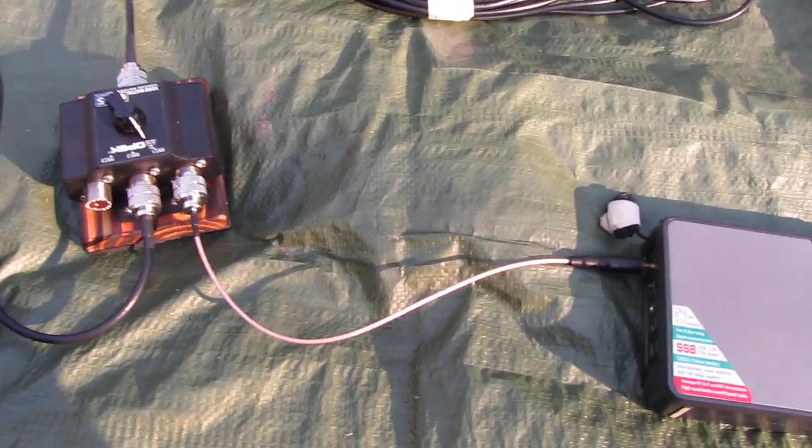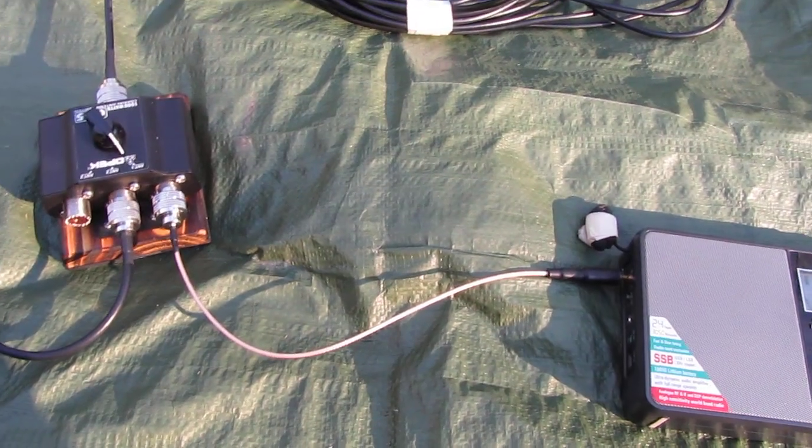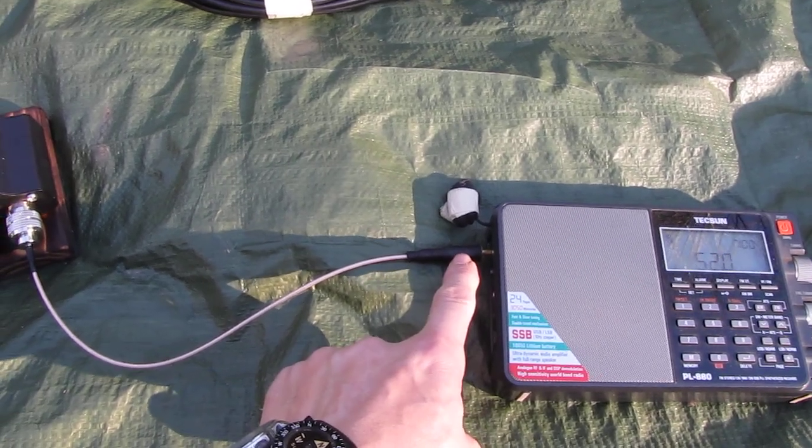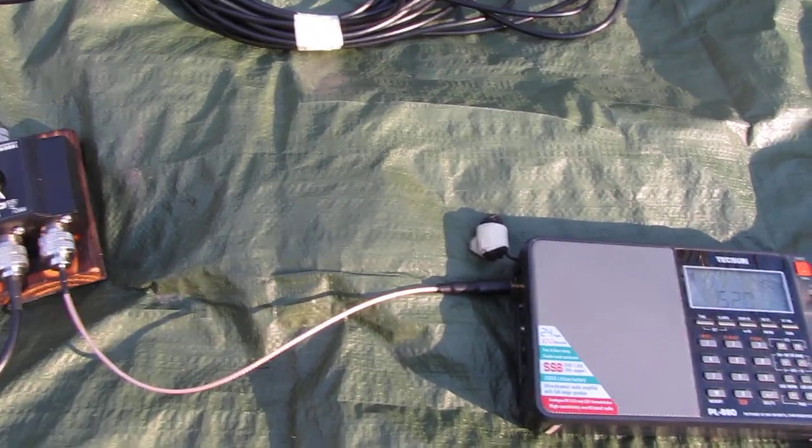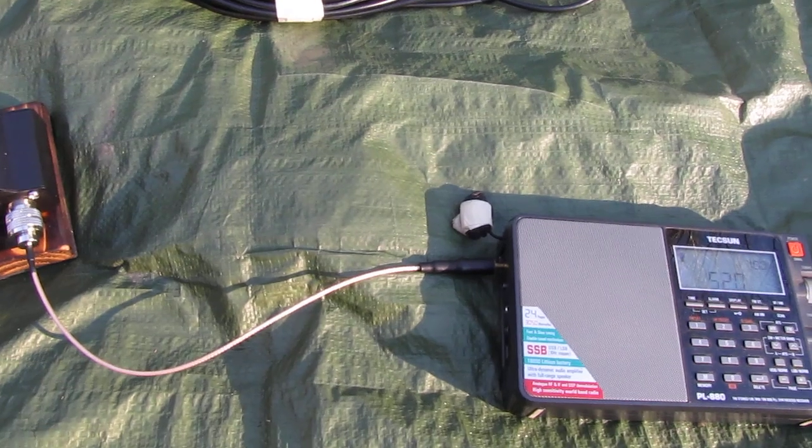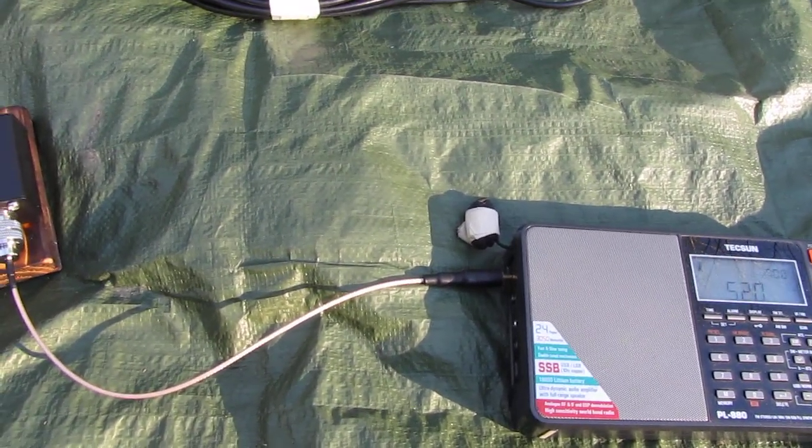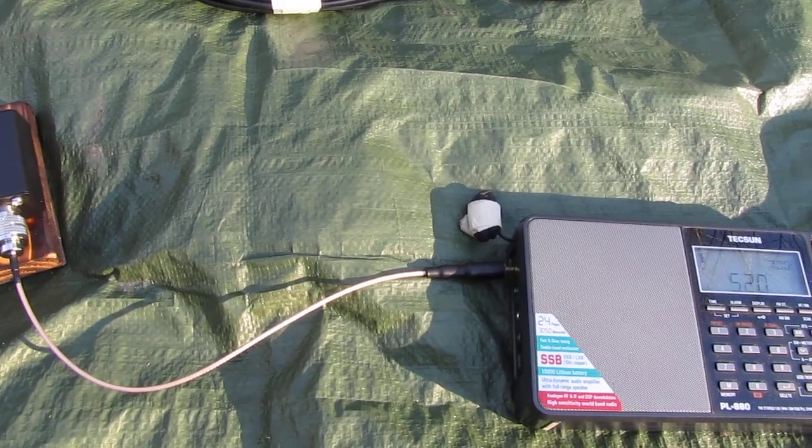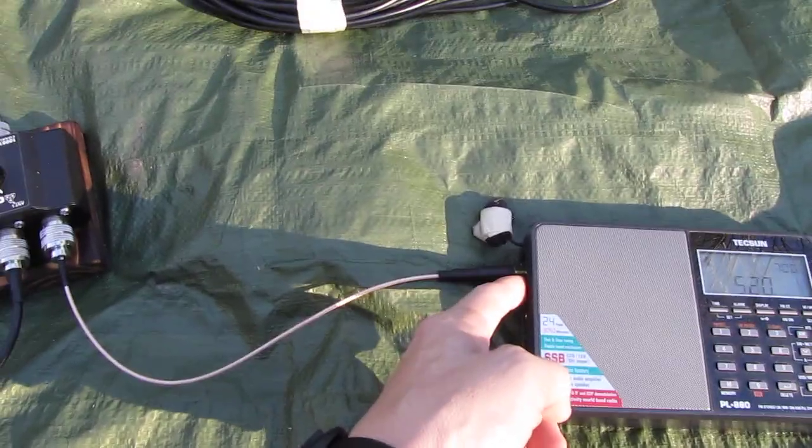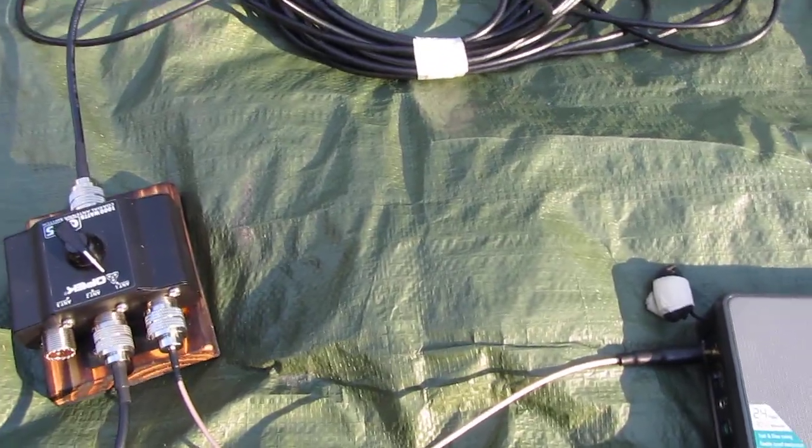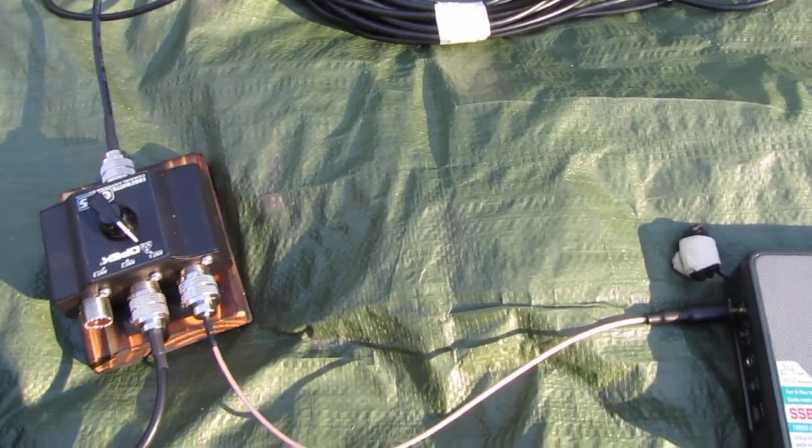Of course you can also get something like this and then use a gator clamp. The most simple solution to clamp on because some radios don't have an external plug-in and you simply need to clamp it on the antenna. But of course if you can use the plug-in that always gives you a better signal. So that is basically the setup.